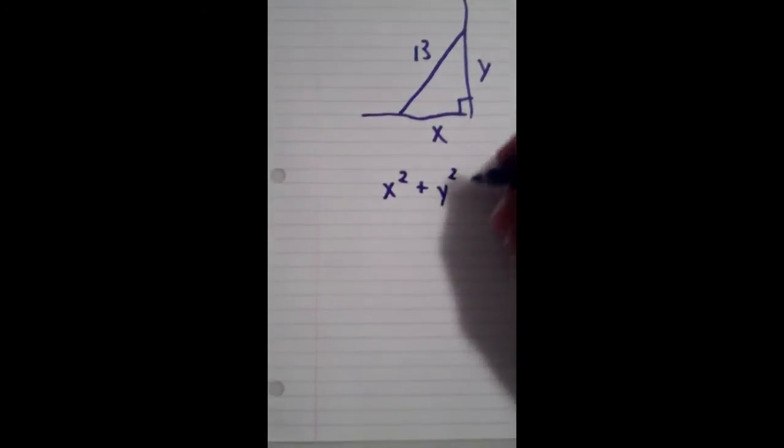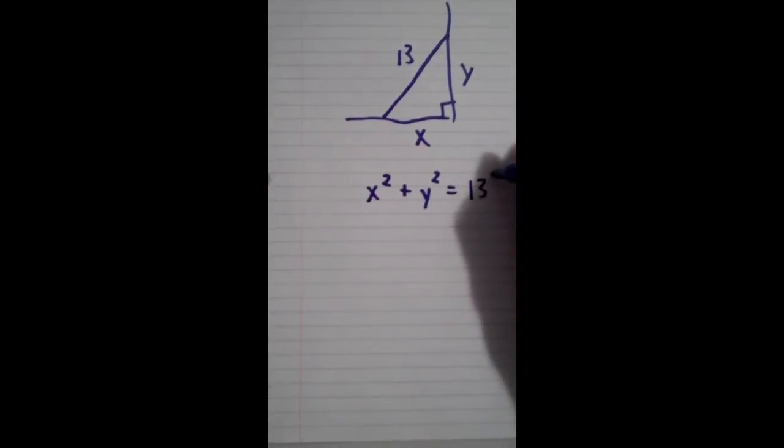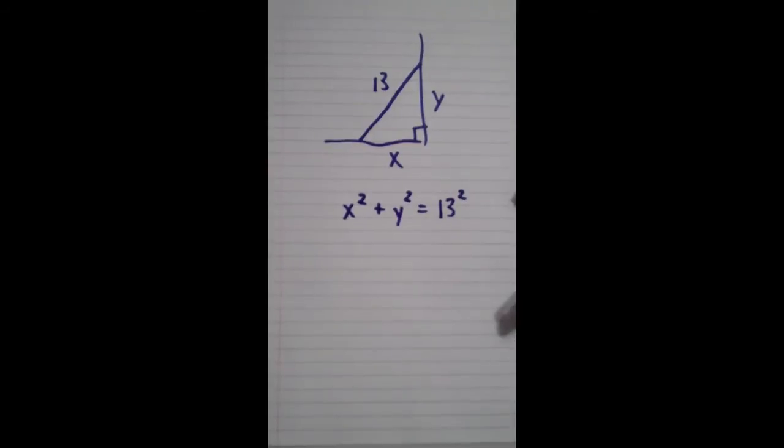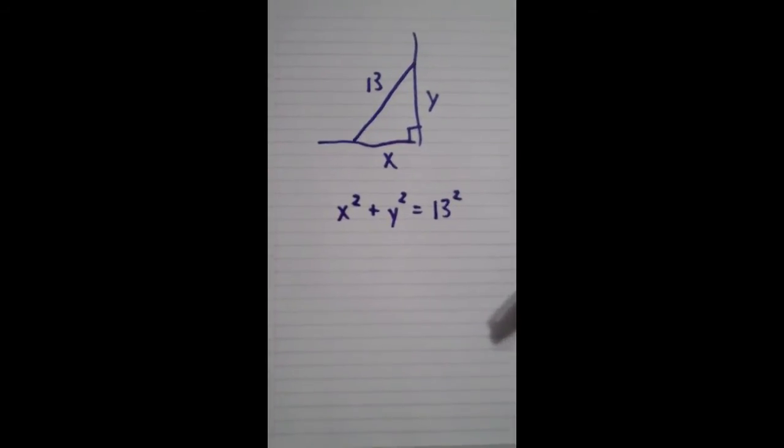x squared plus y squared is going to be equal to 13 squared, no matter what. So in this case, that is our equation that relates x and y. Wasn't too hard to get in this case.